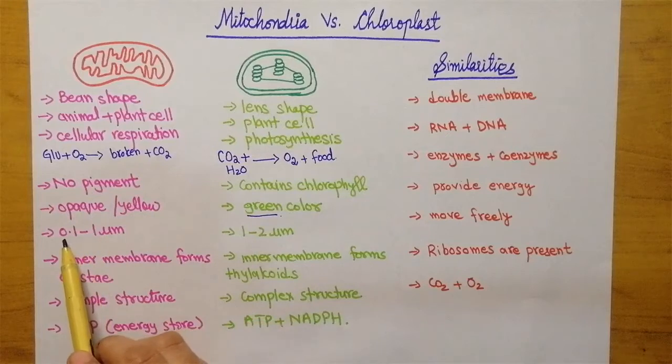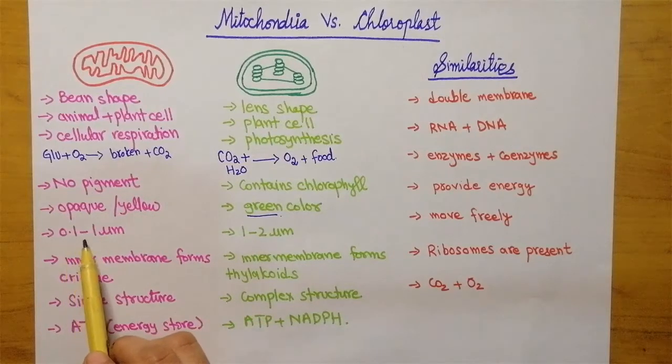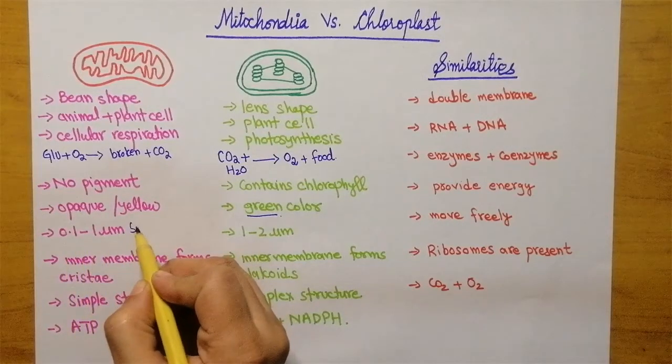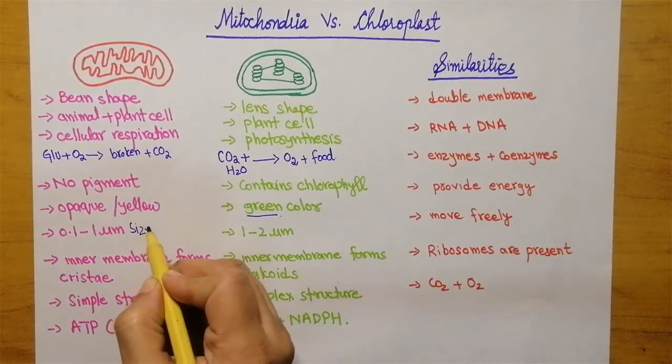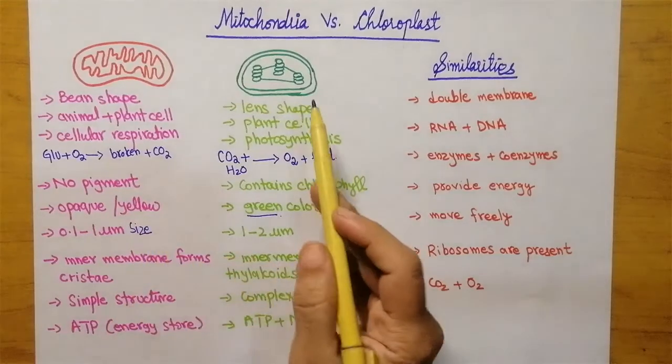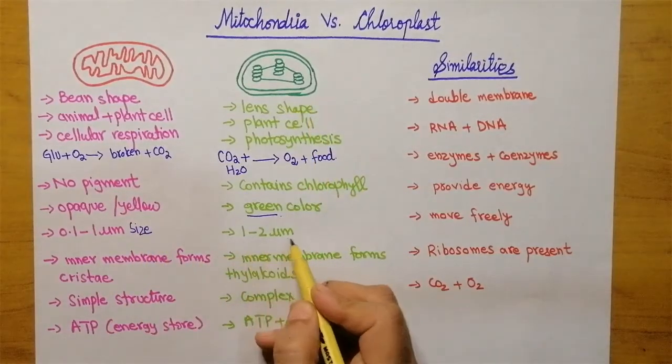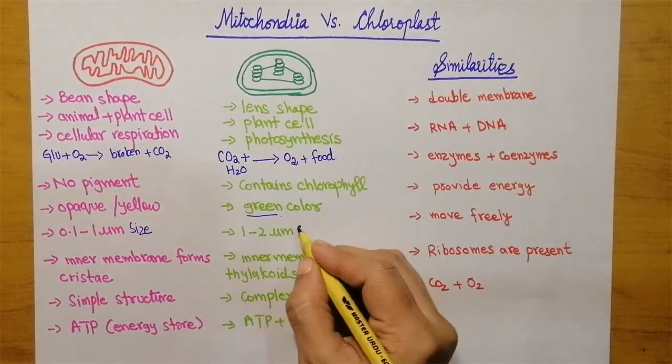Mitochondria, in comparison to chloroplast, is small in size. Its size is 0.1 to 1 micrometer, while chloroplast is 1 to 2 micrometers in size.